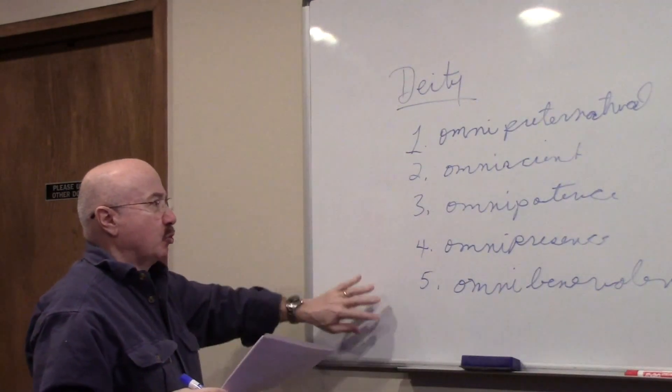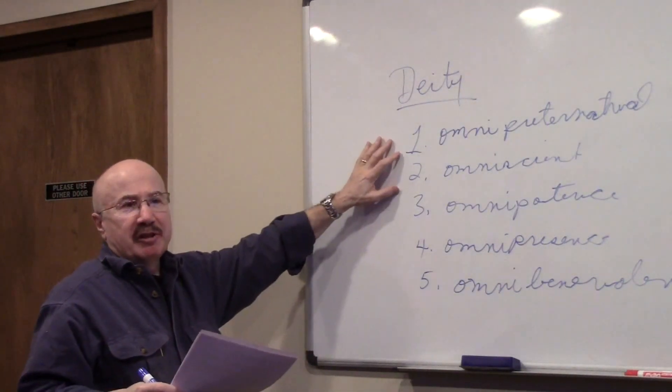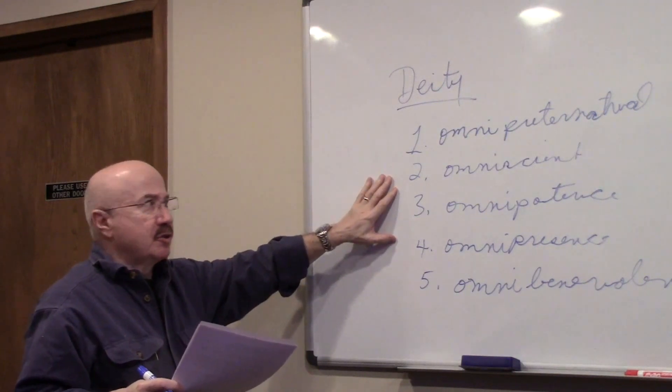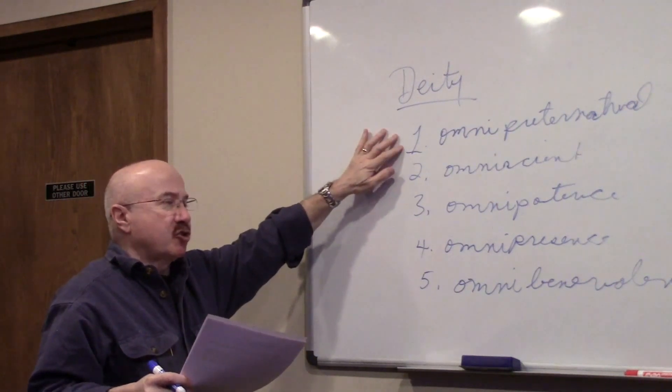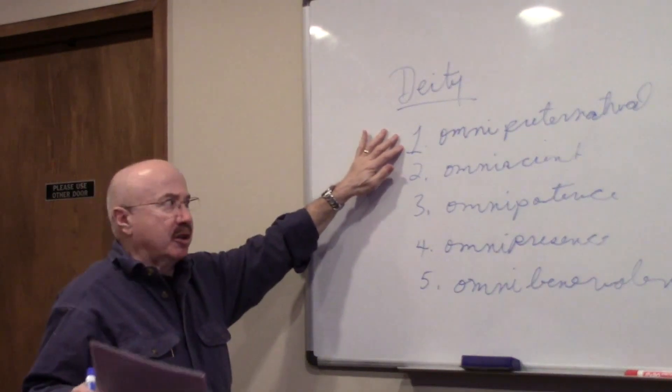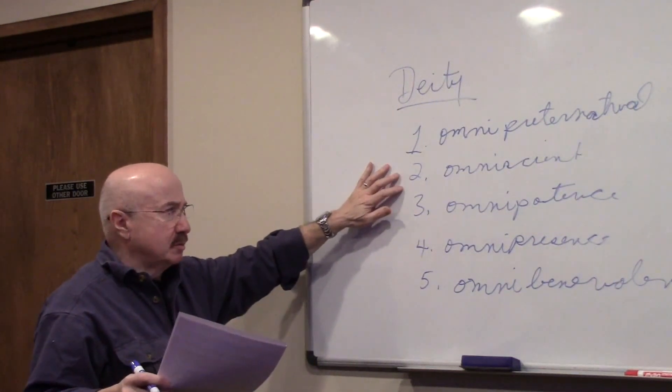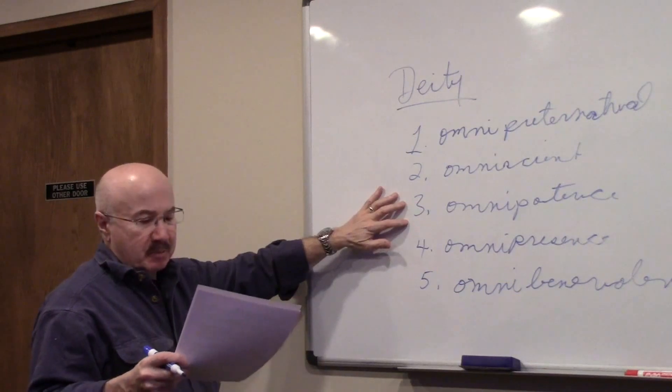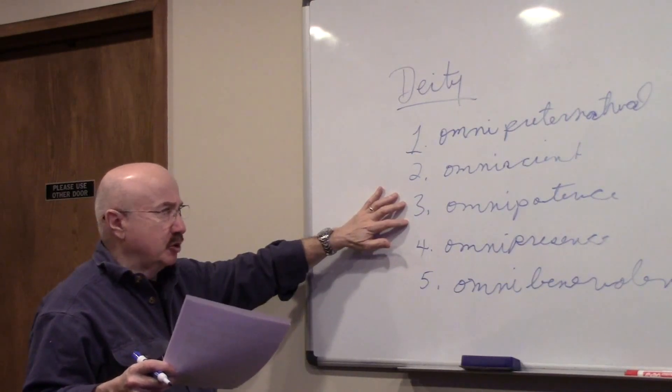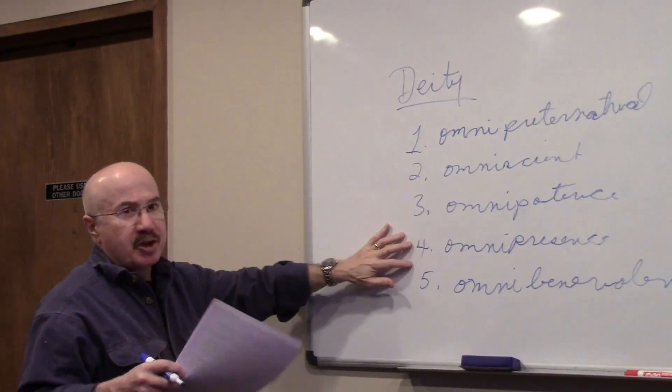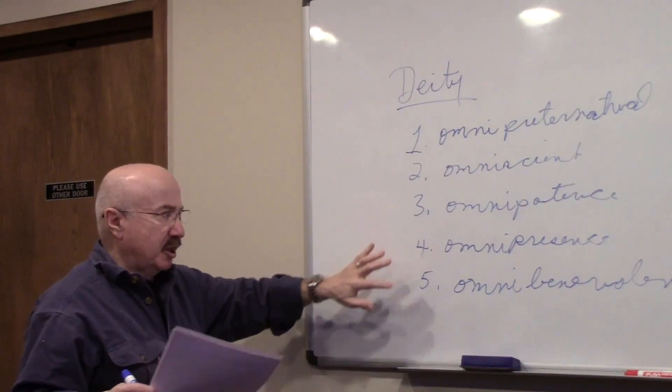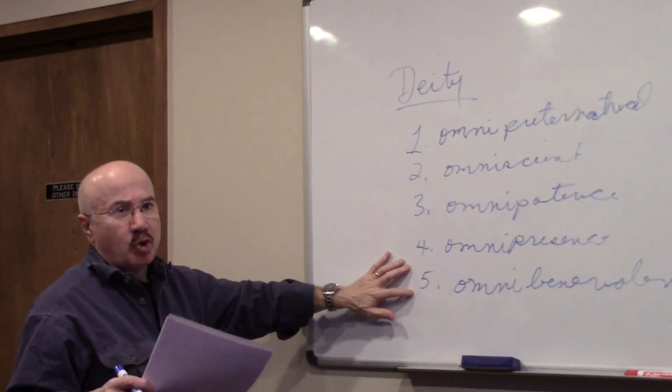So when you look at the major religions of the world, these are the recurring themes through those religions. Omnipreternatural, meaning outside the natural realm. Omniscient means it knows all. Omnipotence means it's all-powerful, can do anything. Omnipresent, it's everywhere. And omnibenevolent, it's all-good.